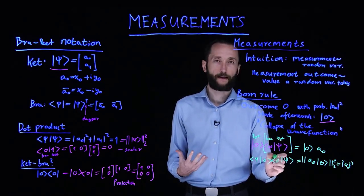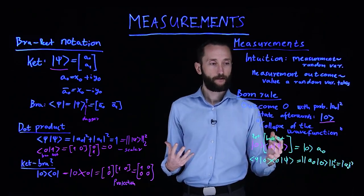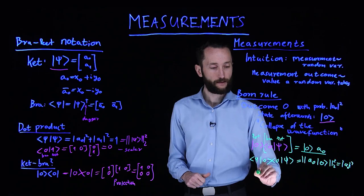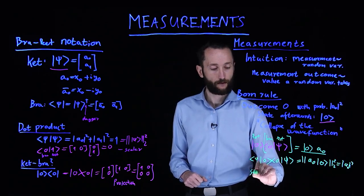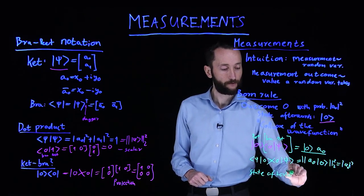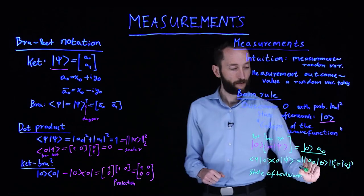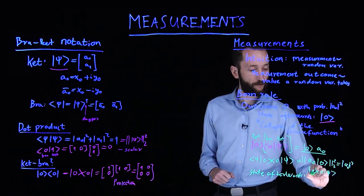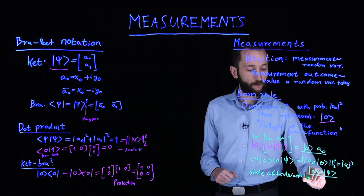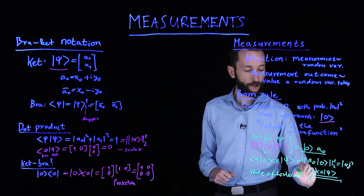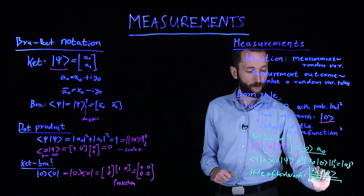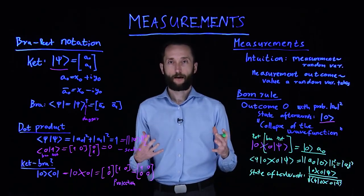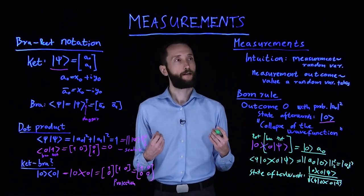The state afterwards is basically this state, just re-normalized, which means that if we look at what we get, this is going to be this projection in the denominator. In the denominator, we have to re-normalize the state, which is going to be the square root of exactly this expression. This is the mathematical way of describing how you pull out samples from a quantum state and how you apply measurements to this particular probability distribution.